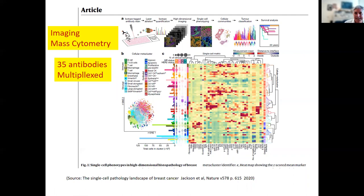Another interesting approach uses mass spectrometry rather than a microscope. Instead of labeling antibodies with fluorescent dyes, they are labeled with mass tags — isotopes of different molecular weight. All these antibodies are applied to your sample, then a high-resolution beam blasts the sample apart, and the isotopes fly through the mass spectrometer for identification. You can get quantitative information on how much of each antibody was present at each spot, scanning across the entire specimen to generate a giant spatial dataset.